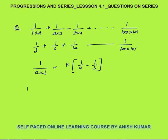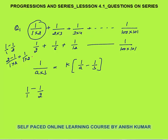How can I write 1/(1×2)? I can write it as 1 − 1/2. If you solve 1 − 1/2, the LCM is 1×2, giving (2−1)/(1×2) = 1/(1×2). So 1/(1×2) is the same as 1 − 1/2.